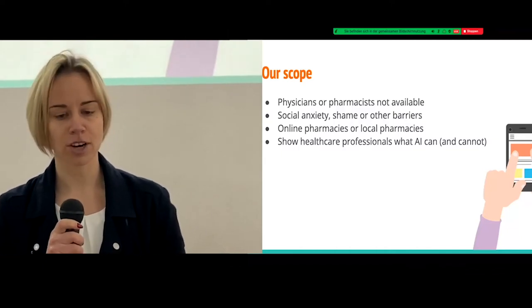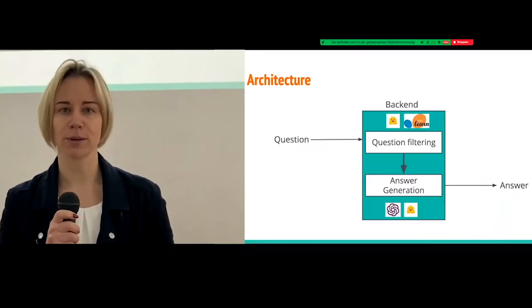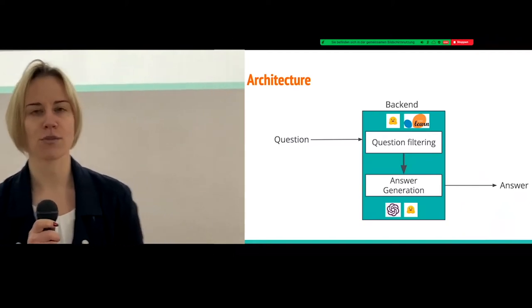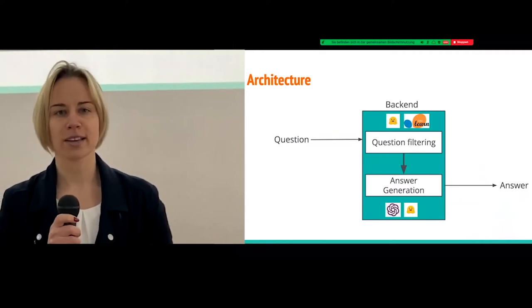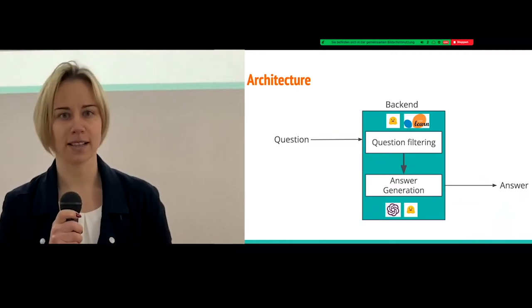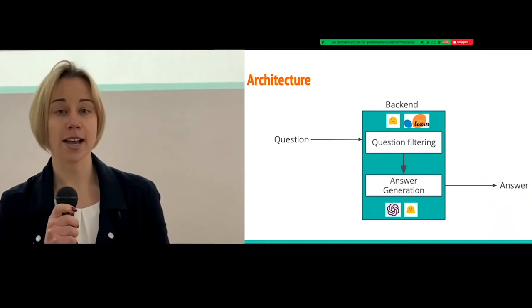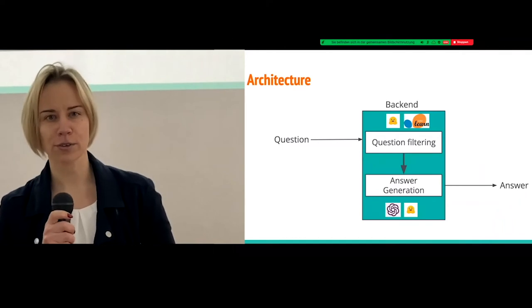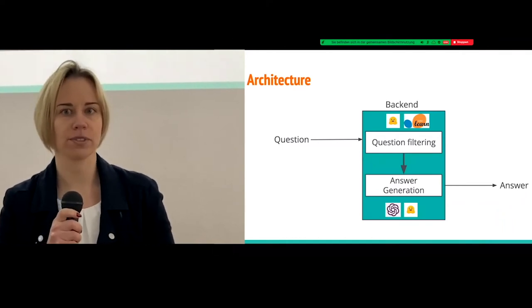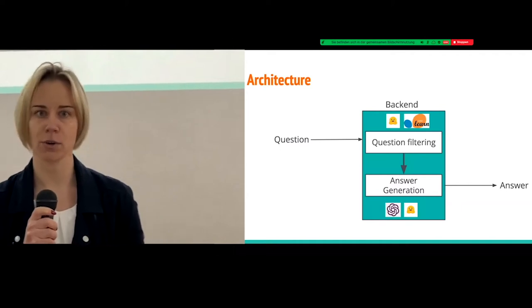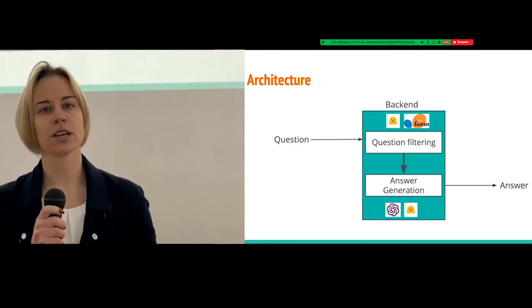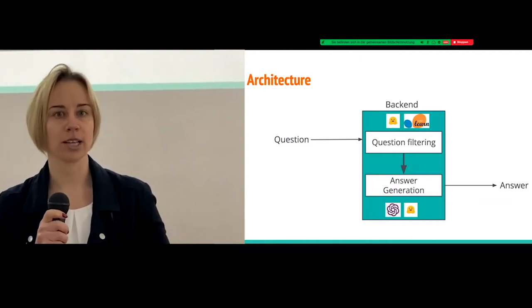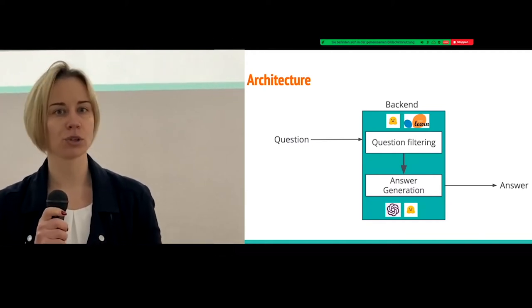So, let's jump right into how we solve that problem. Here you see the basic structure of our backend. When a question is asked, it first passes a classifier, which decides if it's a health care question or not. If it's not a health care question, the questionnaire is made aware that the engine is built to answer health care questions. And otherwise, if it's a health care question, the question is passed to a text generating model of your choice.